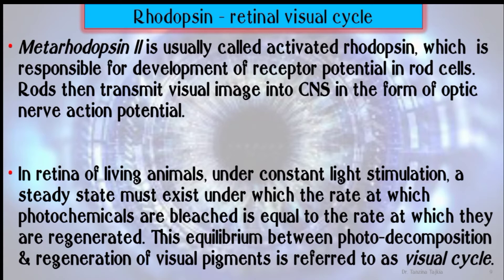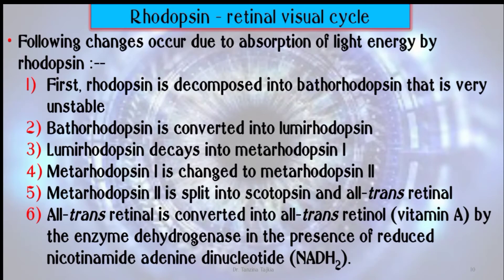A steady state must exist under which the rate at which photochemicals are broken down is equal to the rate at which they are regenerated. This equilibrium between photo decomposition and regeneration of visual pigments is referred to as the visual cycle.